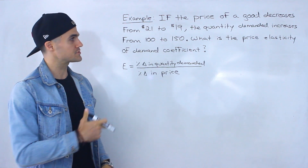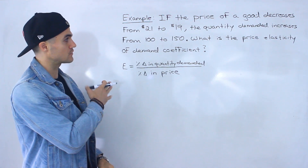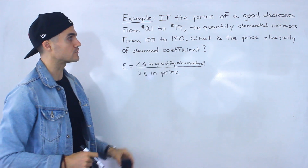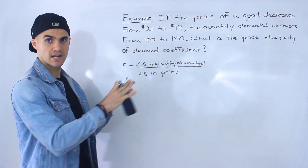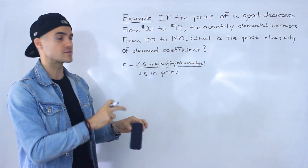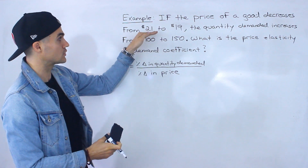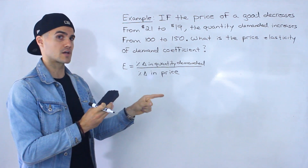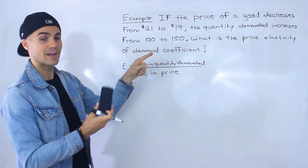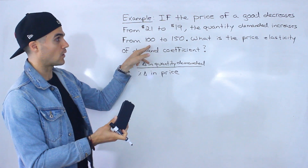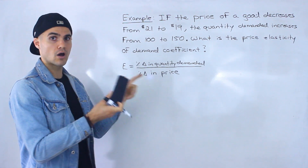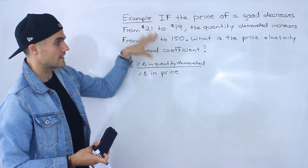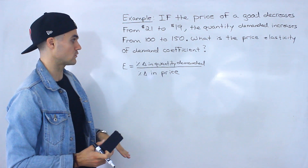Let's work through an example. Say the price of a good decreases from $21 to $19, and the quantity demanded increases from 100 to 150. Notice this follows the law of demand: when the price of a good decreases, quantity demanded increases — or vice versa, if price increases, quantity demanded decreases. Either scenario can occur; in this case we're dealing with a decrease in price. With that scenario, what is the price elasticity of demand coefficient?